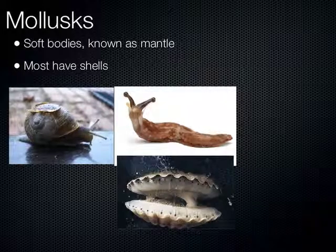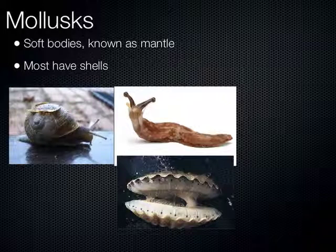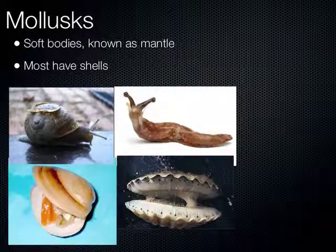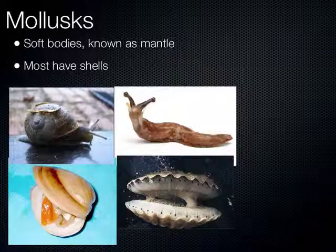Clams, oysters, and scallops are another type of mollusc called bivalves — meaning two shells. Many of them are filter feeders: they suck in water, filter out little bits of food, and send it out. This is the foot of a clam. They can open their shell, put this muscular foot out, and use it to burrow into sand. When you eat a clam, everything inside the shell is all the body systems of that clam — its reproductive system, digestive system, all there.